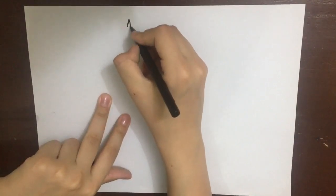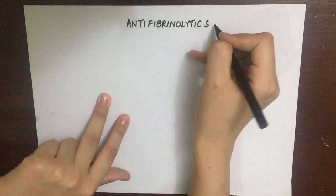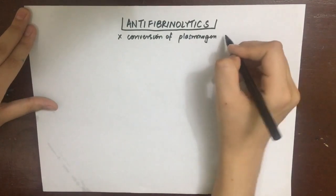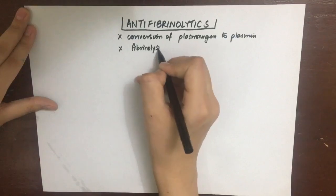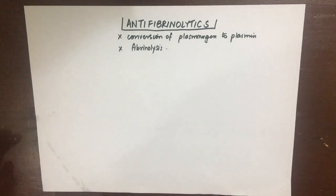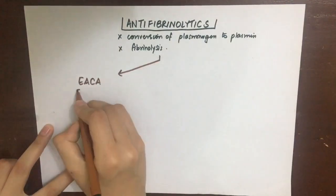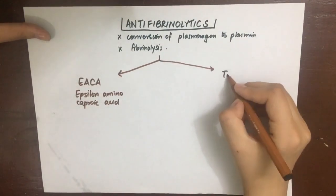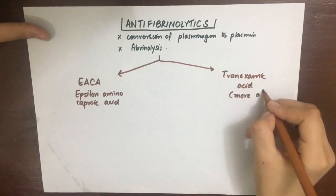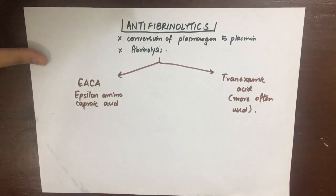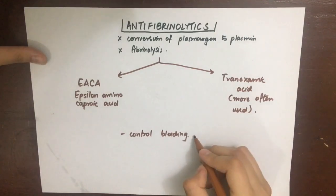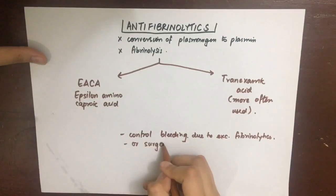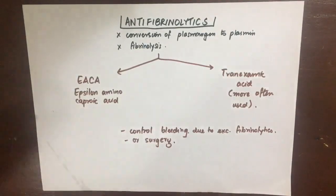In cases of overdose of fibrinolytics or excessive bleeding, we use anti-fibrinolytics, which inhibit the conversion of plasminogen to plasmin, thereby inhibiting fibrinolysis. Two important drugs are epsilon-amino-caproic acid (EACA) and tranexamic acid, which is more potent than EACA and more commonly used in hospitals. Both can be used to control excessive bleeding due to fibrinolytic therapy or following surgery such as prostatectomy, tonsillectomy, or tooth extraction.